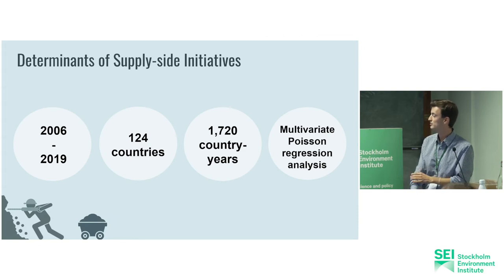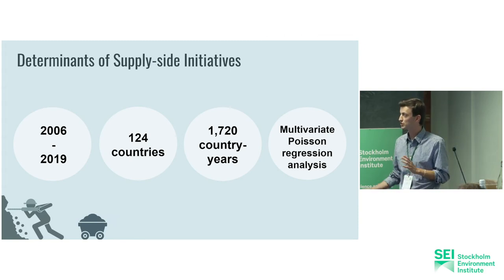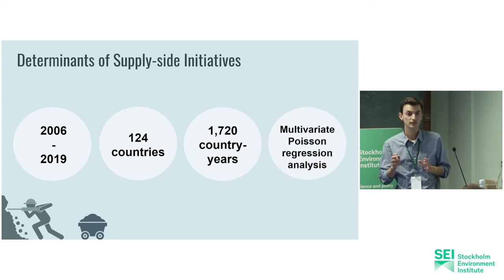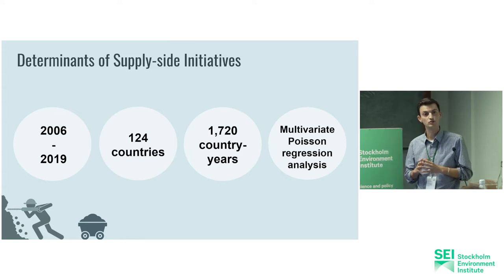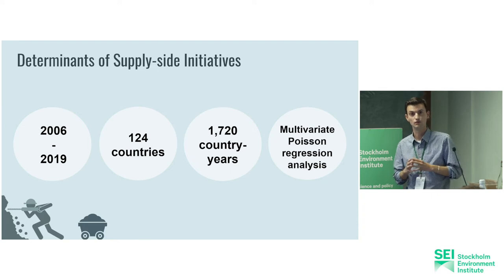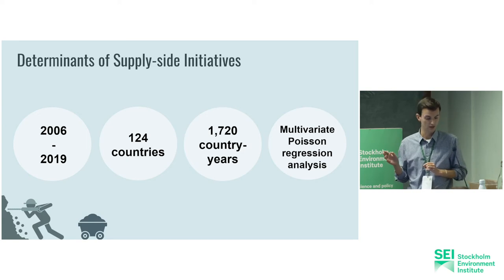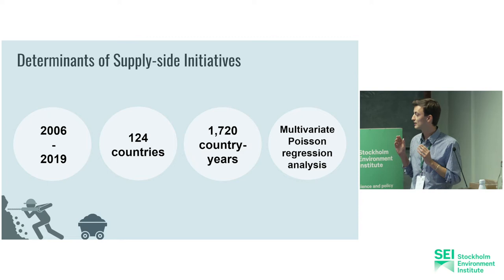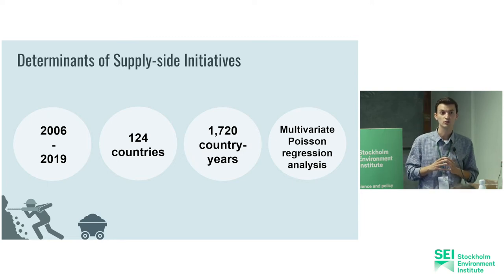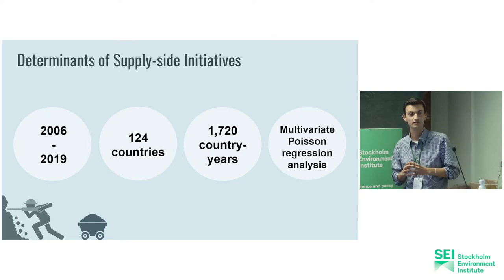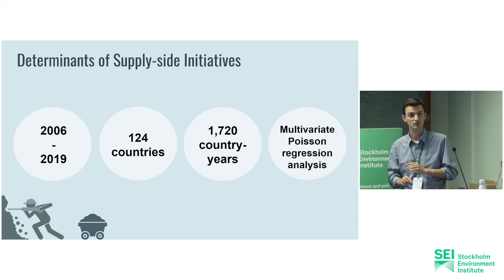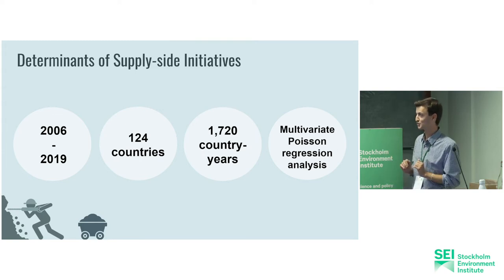The next project is about the determinants of supply side initiatives — developing a conceptual framework for factors affecting the likelihood of having active constraints for national governments. Looking at 124 countries with fossil fuel reserves between 2006 and 2019, we identified several factors that contribute to the likelihood or not of having an active measure implemented by a national government. This is only for national governments, not subnational governments or civil society organizations.